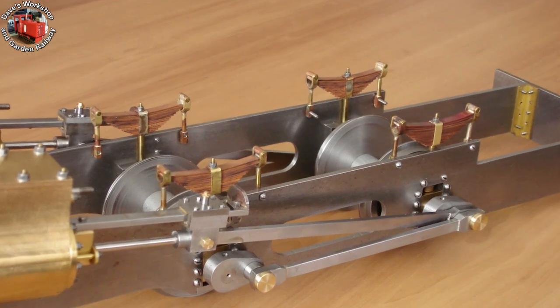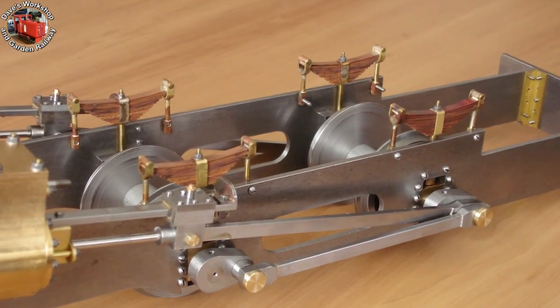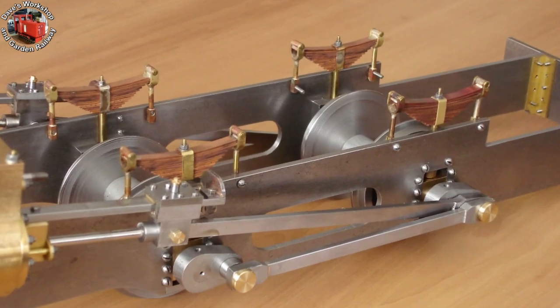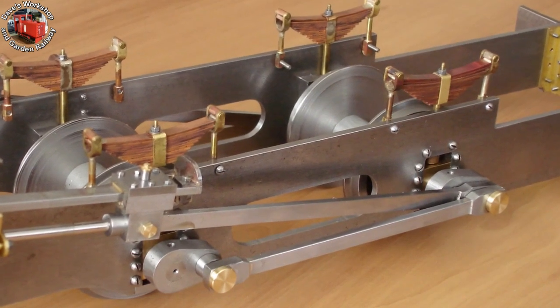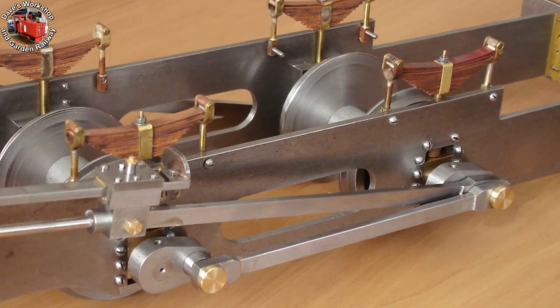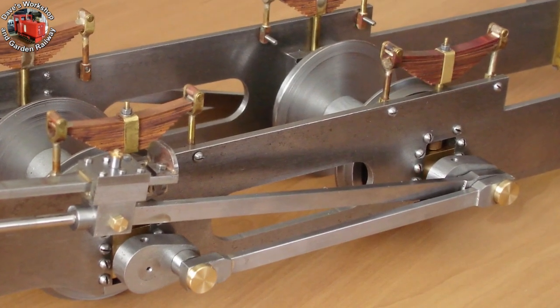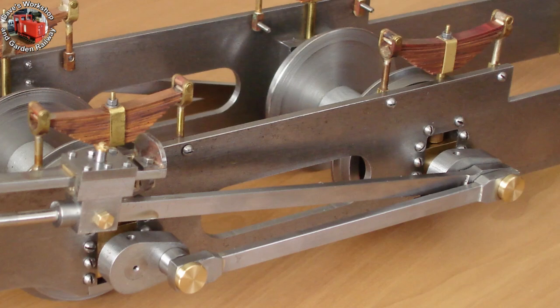Welcome to the live steam build of Charles, the Penrhyn quarry engine. This is being built to 1:12th scale to run on gauge 1 or G gauge 45mm gauge track. Let's get into part 16 of the loco build.